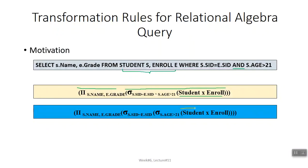Ya phir similar query alag tarah likh sakte hain: phir se pehle Student aur Enroll ka Cartesian product karein, uske baad jo result aaye us par sirf sigma apply ho jahan age > 20 hai, phir dobara sigma apply karein jahan Student ki s.id aur Enroll ki s.id similar hain, aur end of the day pi apply karein. Yeh dono queries relational mein execute karne ka different tareeqa hai, par inka result jo hai woh same hai.